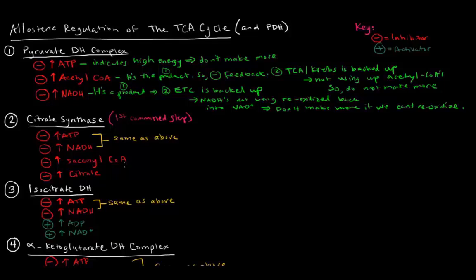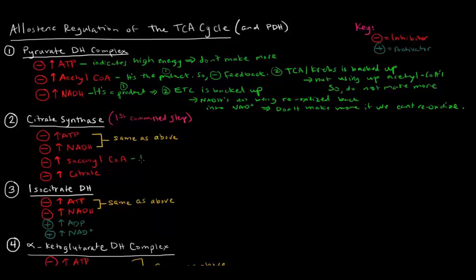High levels of succinyl-CoA also inhibit citrate synthase. If there's a buildup of succinyl-CoA, that must mean it's not going further in the TCA cycle — not being converted into succinate — indicating the Krebs cycle is not going to completion. Again, this is the whole idea that the Krebs cycle is backed up. High levels of succinyl-CoA indicate the Krebs cycle is backed up.